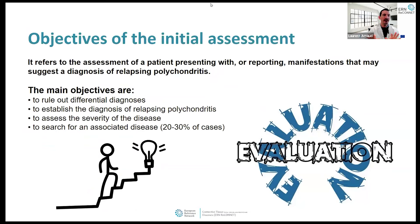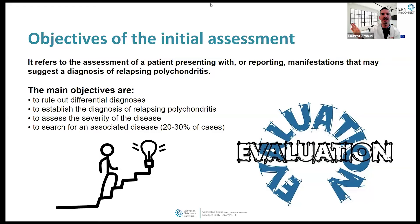The PNDS tells us clearly what the main objectives of the initial assessment are. I would highlight four: first, to rule out what looks like relapsing polychondritis but is not; second, to make the diagnosis; third — very important — to assess the severity of the disease; and finally, to search for another associated disease. We should not stop when we find an RP diagnosis, because in 20 to 30% of cases there is another additional disease.